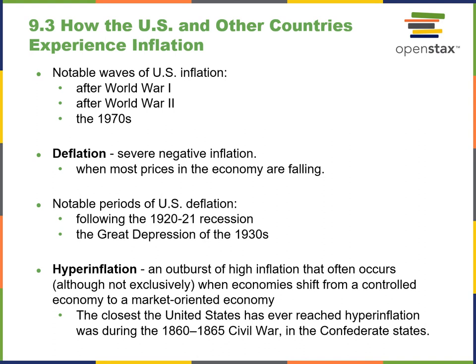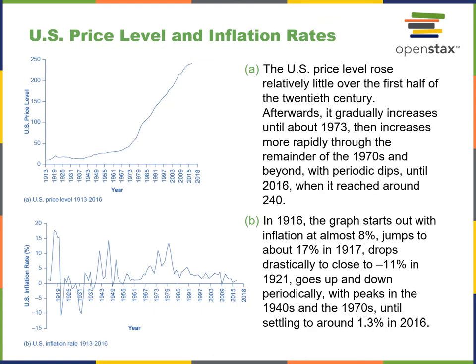Hyperinflation is defined as a high outburst of high inflation that occurs when economies shift from a controlled economy to a market economy. Looking at U.S. price level and inflation rates on a chart, if you draw a straight line, the index level is 100 around 1979, with everything compared to the buying power of 1979. Back in 1913 it was quite low — about a 10-to-1 difference — while from 100 to about 250 in present day, our index went up 150 points from 1979 to now, which stands to reason.